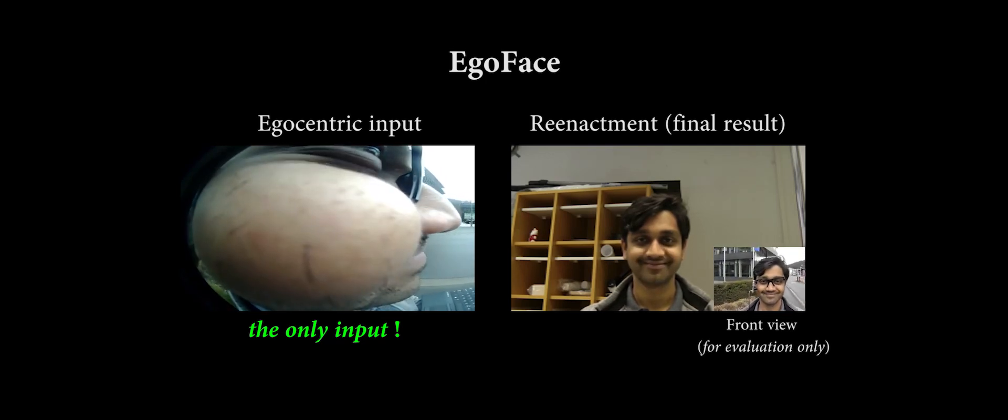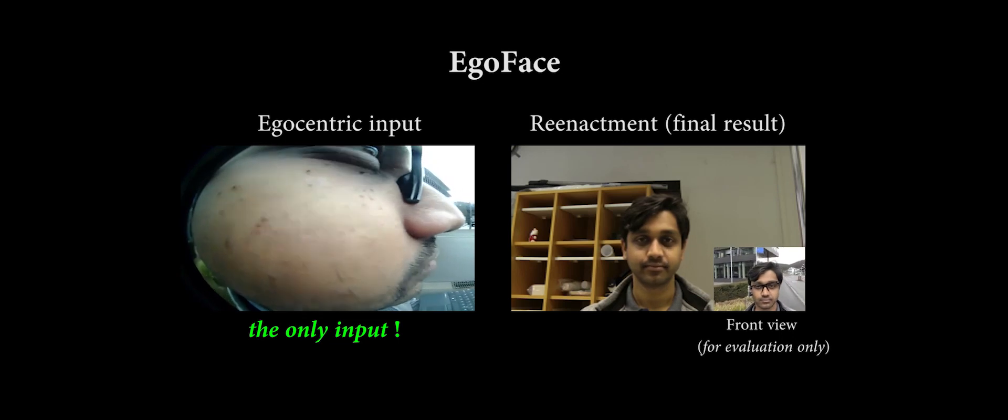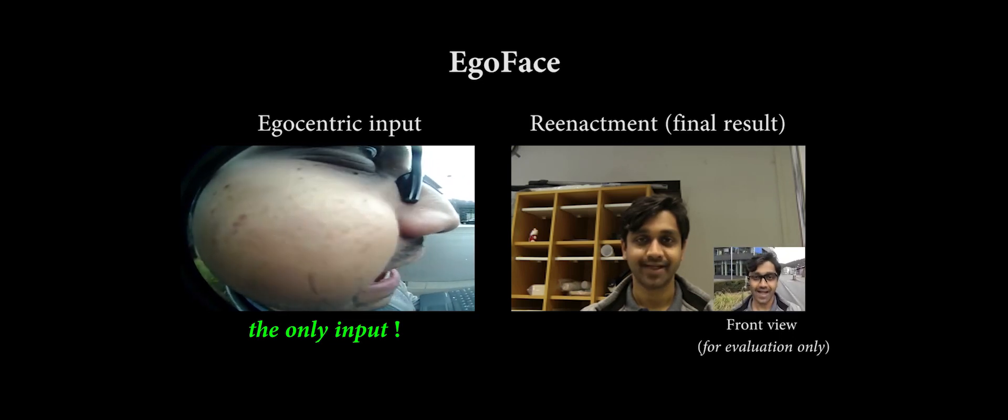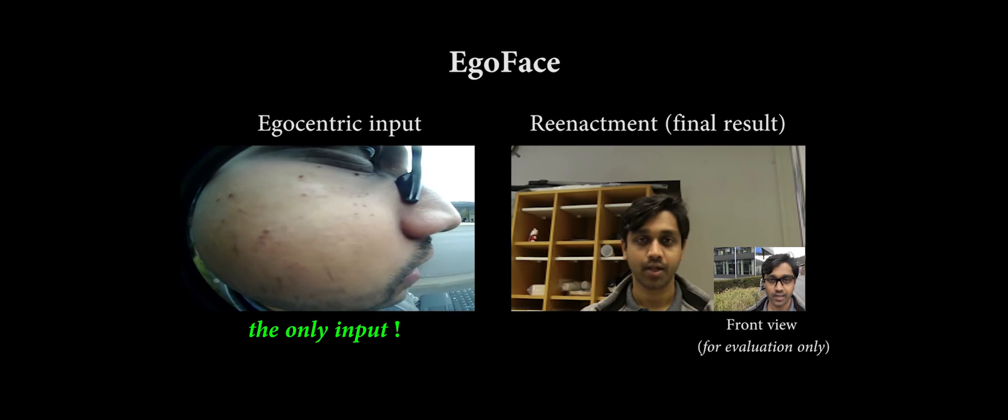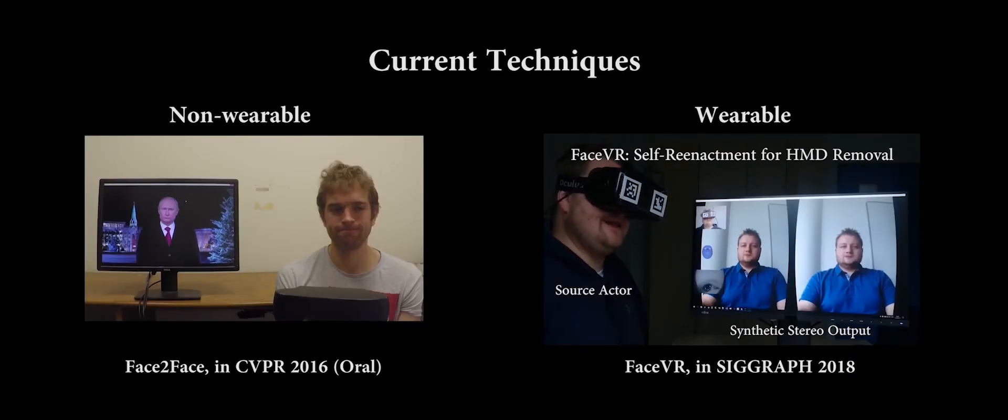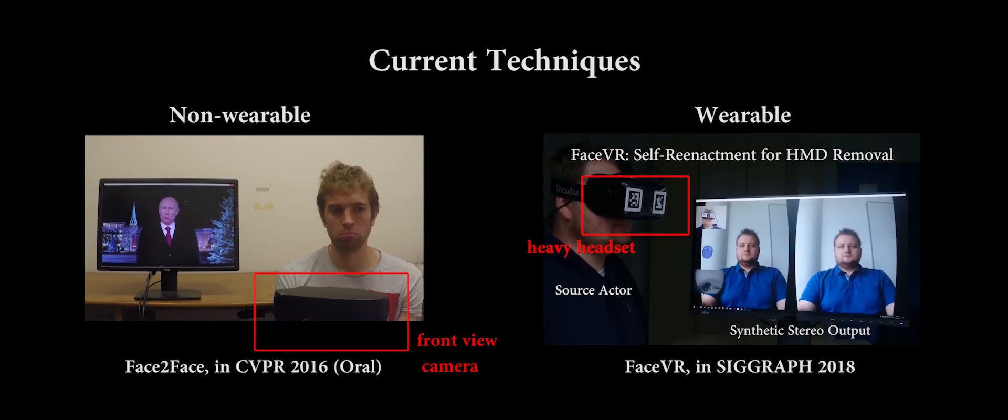EcoFace works in different environments and captures a variety of expressions including asymmetrical ones. Current reenactment techniques require front view cameras observing the full face, or they use heavy gear such as VR headsets. This limits their applications in mobile and dynamic environments.